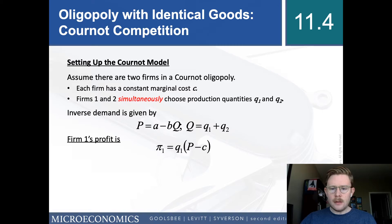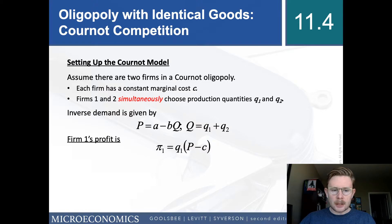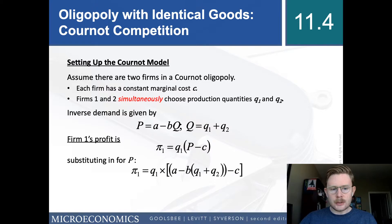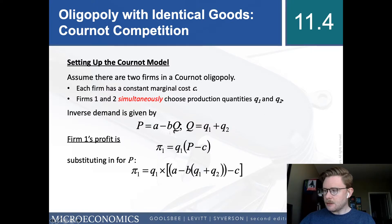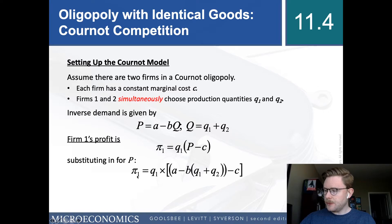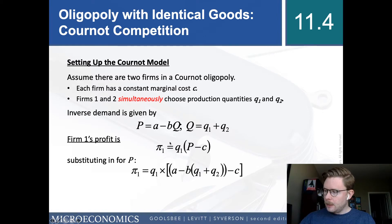Firm one's profits, pi one, equal Q1 — the quantity that firm one produces — times the market price minus the constant marginal cost. The complication here is that we substitute in for P. We have P equals A minus B times capital Q, and we substitute capital Q equals Q1 plus Q2, so pi one equals Q1 times (A minus B times (Q1 plus Q2) minus C).